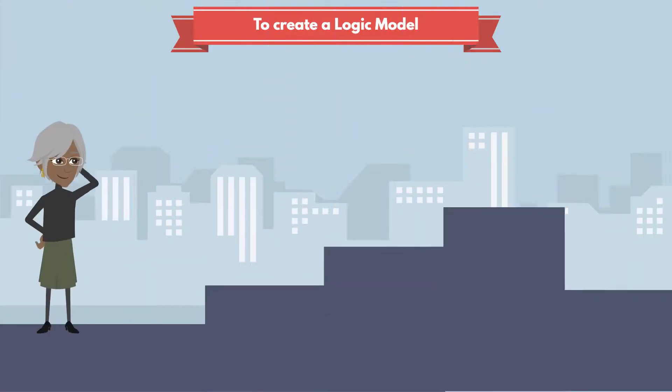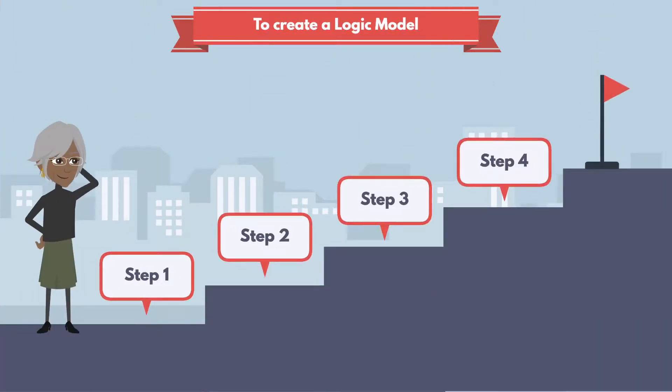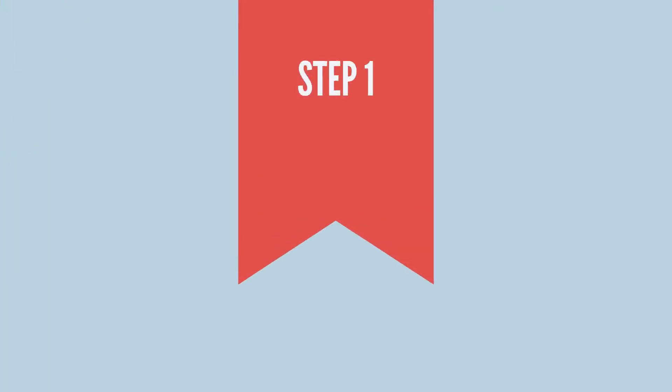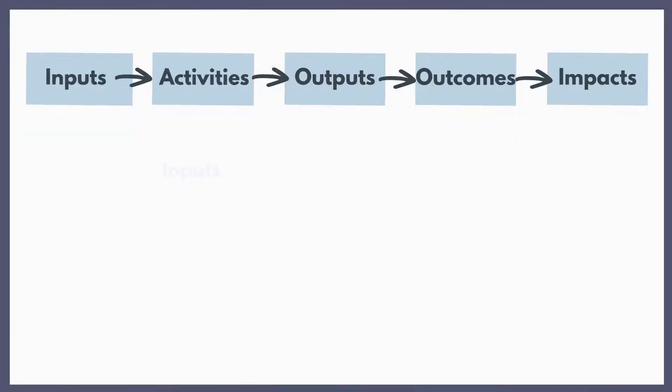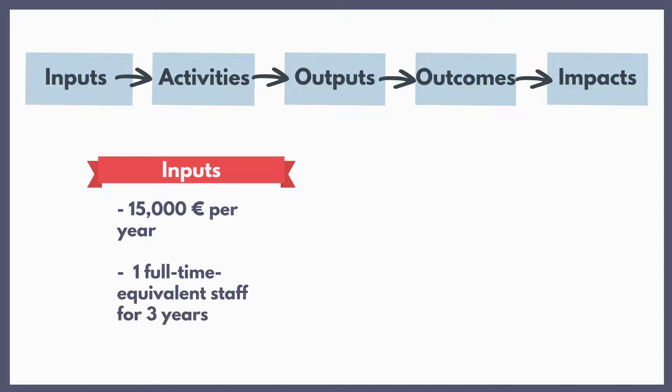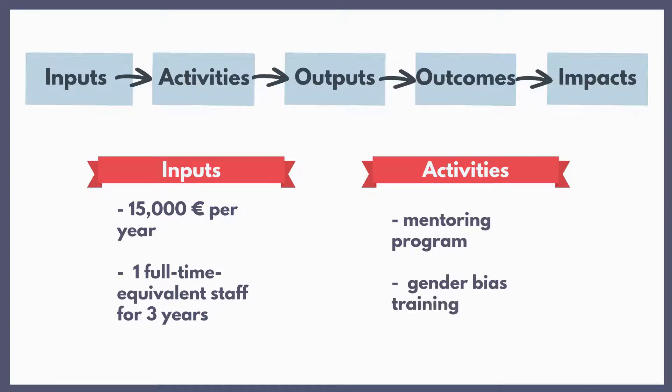To create a logic model, you need to take the following steps. First of all, fill in the logic model pillars designated for the input in activities. In our example, the input would be the yearly budget of €15,000 and the full-time equivalent staff for three years. The implemented activities consist of a mentoring program for female early career researchers, and a gender bias training for members of recruitment committees.